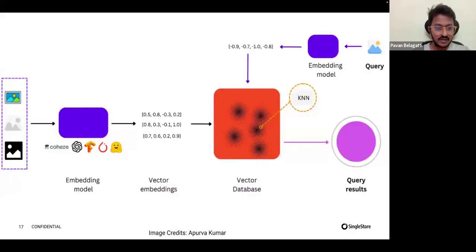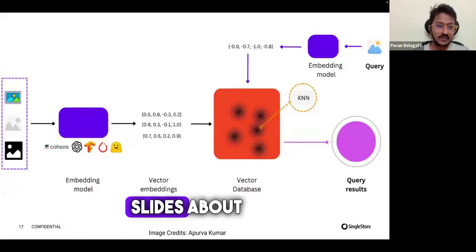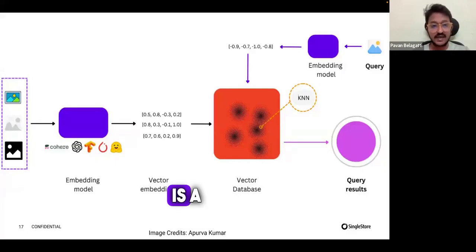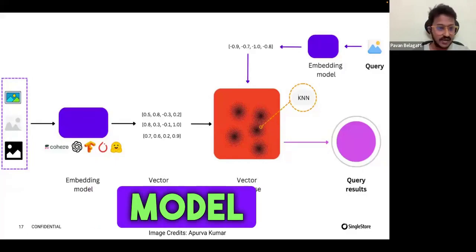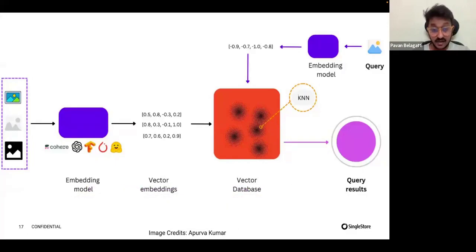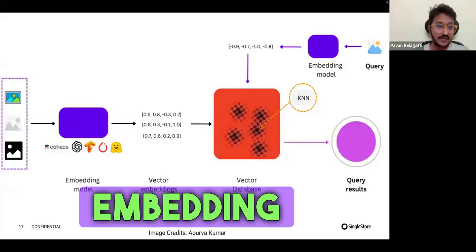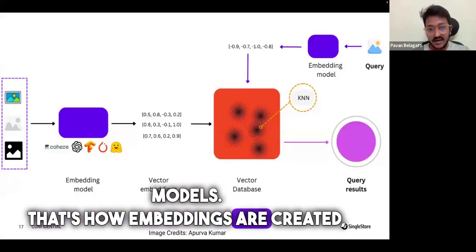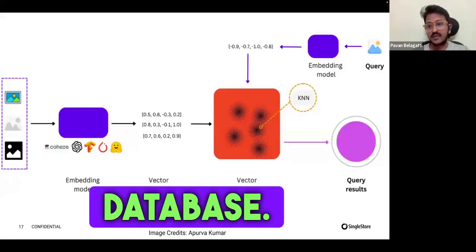From different sources, the data goes into an embedding model. We only talked about OpenAI's ADA embedding model in the previous slides. Here you can see there is Hugging Face. You can use many other embedding models. That's how embeddings are created, which are stored in a vector database.